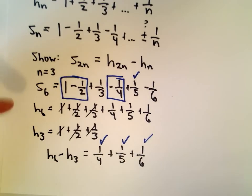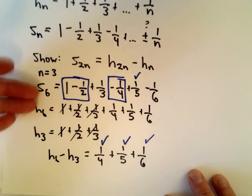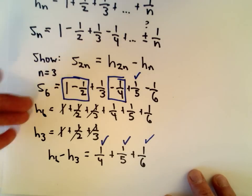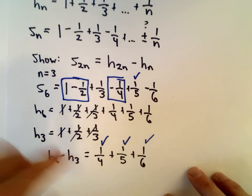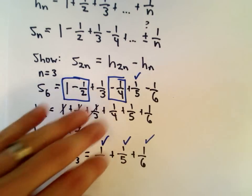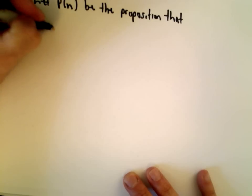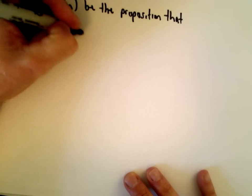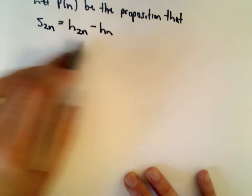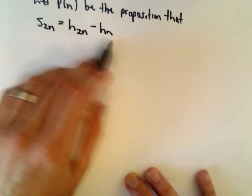So just to convince you that's correct. This is a clever observation, and it seems like a logical place to start — to relate the alternating harmonic series to the harmonic series. Now we're going to do some induction. We're going to let P of n be the proposition that s sub 2n equals h of 2n minus h of n.